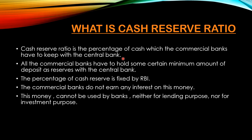This is decided in the monetary policy. All the commercial banks have to hold a certain minimum amount of deposit as reserves with the central bank — that is the minimum amount. When we talk about the cash reserve ratio, it's a fixed percentage. It is the minimum amount which will be kept as reserves with the central bank. The percentage of cash reserve is fixed by RBI. It is unique and fixed — it is not upon the discretion of any commercial bank.